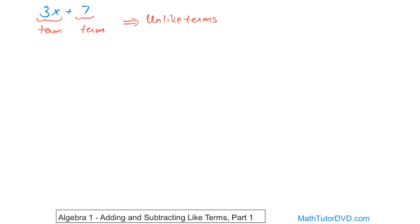It turns out in algebra that you can only really do this addition if the terms are actually like terms. Like if I have a bucket of apples and another bucket of apples, I'm allowed to add those apples together — maybe 10 in one bucket, 15 in another. But if I have a bucket of apples and a bucket of jelly beans, I can add the numbers, but it won't make any sense to add apples to jelly beans. It doesn't make sense unless the units match, unless the object matches.